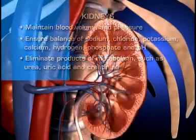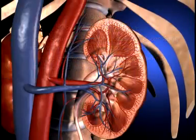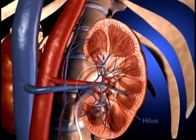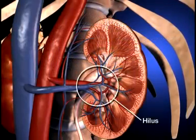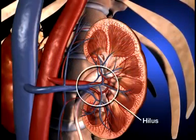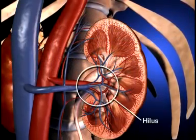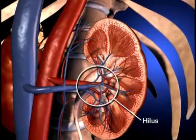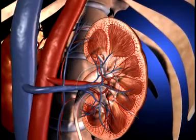The medial border of the kidney is indented by a deep fissure called the hilus, where the blood vessels, nerves, and ureters connect to the kidney.